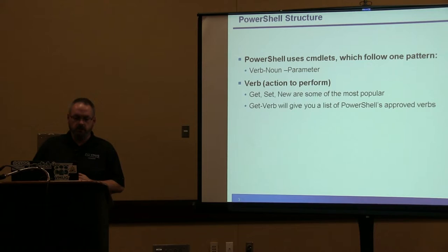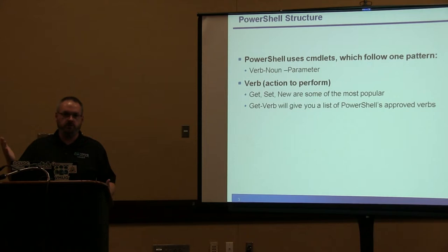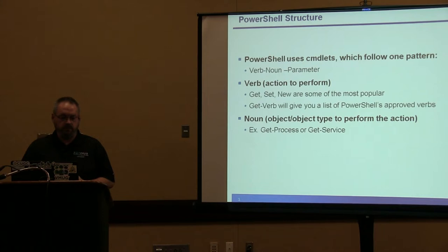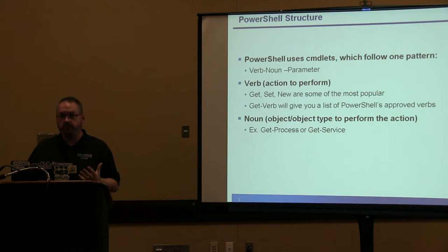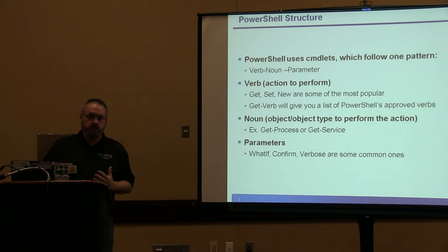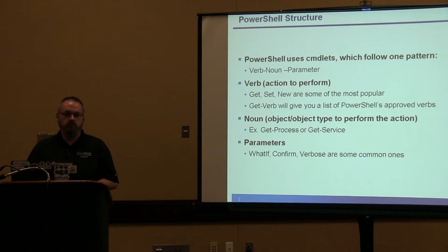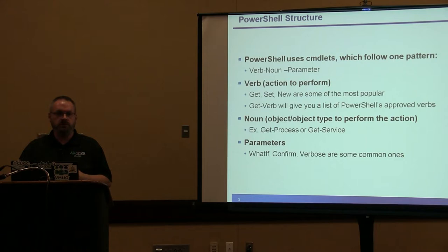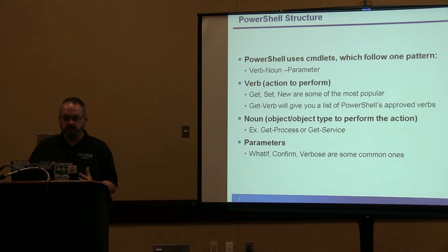If you open up PowerShell and just type in get-verb, it's going to show you all of the approved PowerShell verbs. The nouns represent the type of object you're going to work with — like get-process would get you all the processes running on your machine, or get-service. There are thousands of different cmdlets depending on what you want to do. Common parameters include -WhatIf, which is very important so you can test your code before doing something with it. -Confirm is good for answering questions that come up when you run the command, and -Verbose shows you everything it's doing in the background.